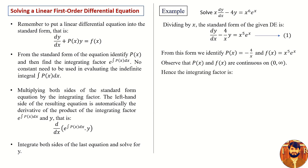Hence, the integrating factor is e raised to the power integral of minus 4 times 1 upon x dx, which equals e raised to the power minus 4 times integral of 1 upon x dx. Since the integral of 1 upon x is log x, we get e raised to the power minus 4 log x, which equals e raised to the power log x to the power minus 4, and which equals x to the power minus 4. So the integrating factor is x to the power minus 4.